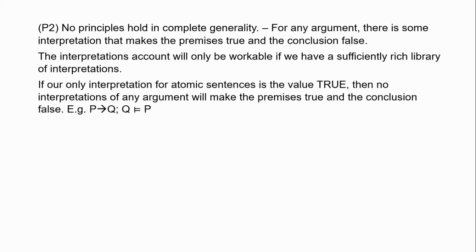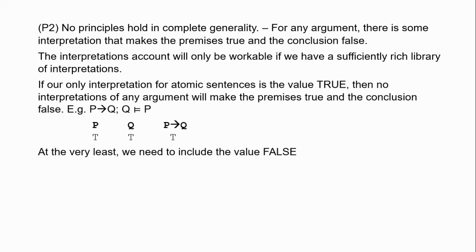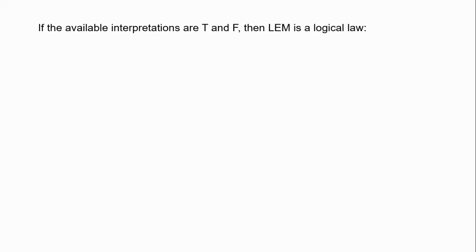At the very least we need to expand our library of interpretations to include the value false. If we do that, we can consider the interpretation where P is false and Q is true, generating a counterexample to affirming the consequent. Now assuming the available interpretations are true and false, it turns out that the law of excluded middle is a logical law, as shown in a truth table. But as Russell notes, perhaps our library of interpretations is impoverished — perhaps some sentences can be neither true nor false.